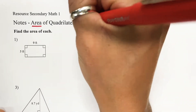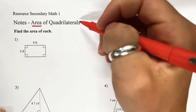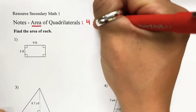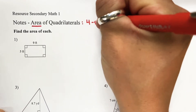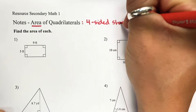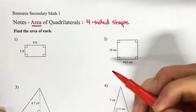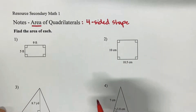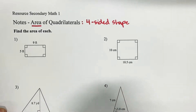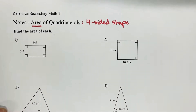What is a quadrilateral? So a quadrilateral is basically any four-sided shape — any shape that has four sides is a quadrilateral. So we're going to find out a few different types of quadrilaterals. You probably already know a couple.